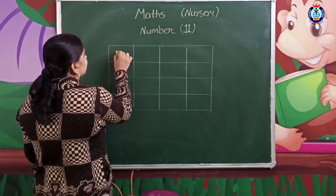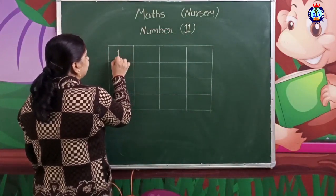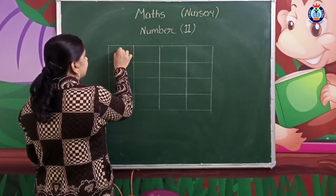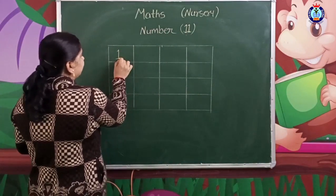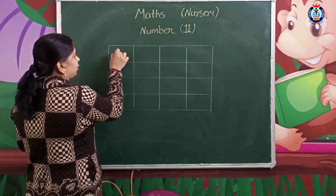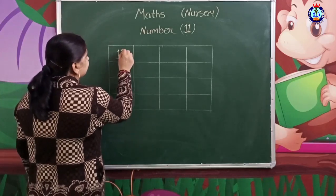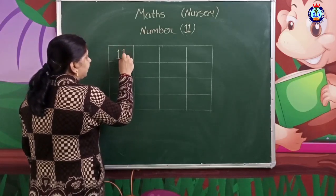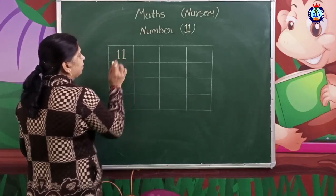Number 11 is the number we're writing down. It has one place and the other - one and another one.